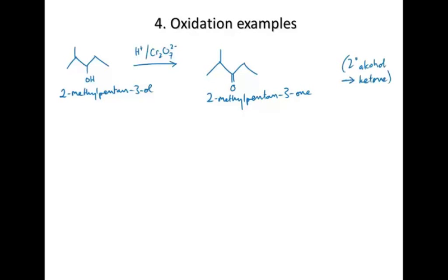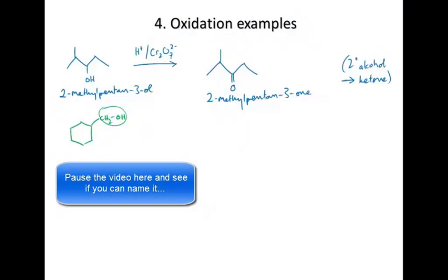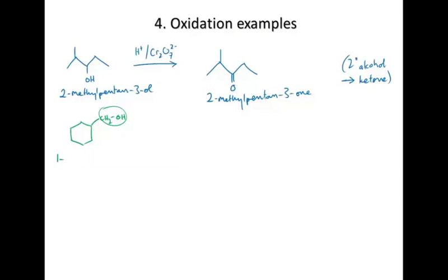Let's try another one. Naming this one is a bit tricky - you might want to start with cyclohexane as the main chain, but remember the main chain must have the functional group on it. So the main chain is this single carbon group here, and cyclohexane is the substituent. The name for this is cyclohexylmethanol.